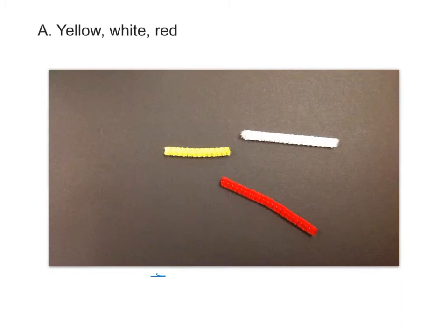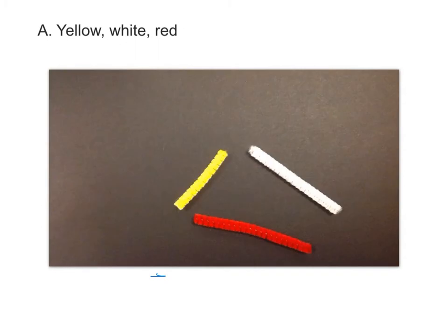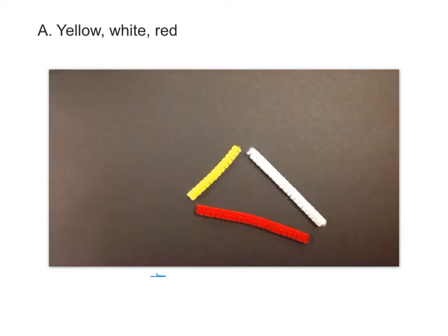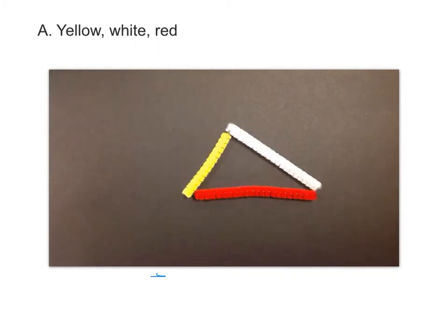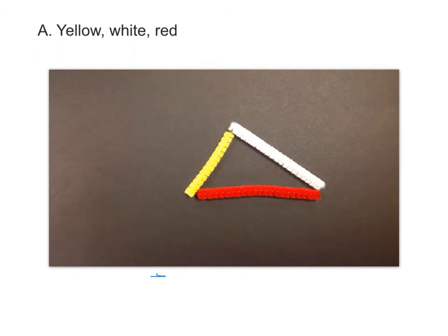So as you can see in the video, we can move them and align them without bending anything. And they make a nice, neat triangle. So you're going to write in your book that it is possible. So next to the letter A, just write the word possible.